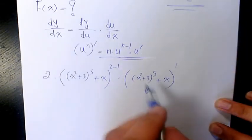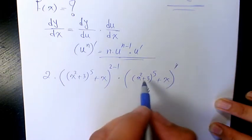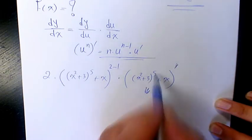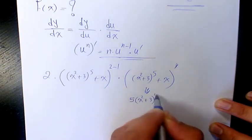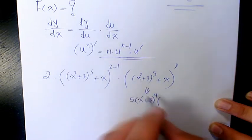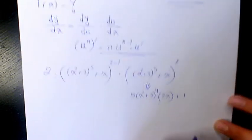Now let's find this derivative. The derivative of this expression: (x² + 3)⁵ derivative will be 5 times (x² + 3)⁴ times the derivative of x², which is 2x, plus the derivative of x, which is going to be 1.